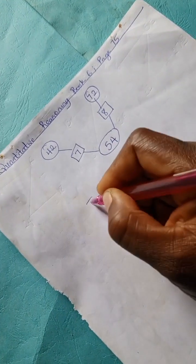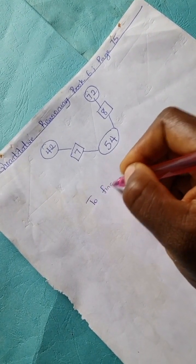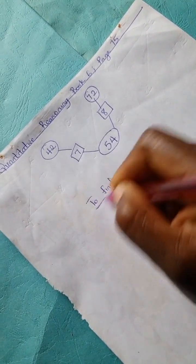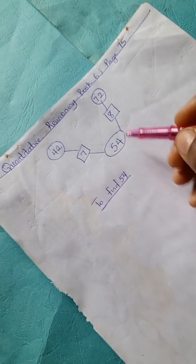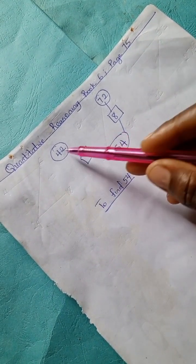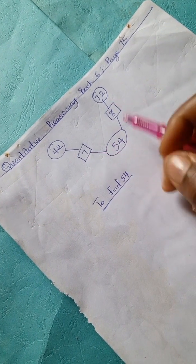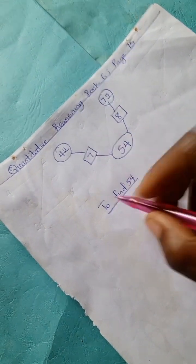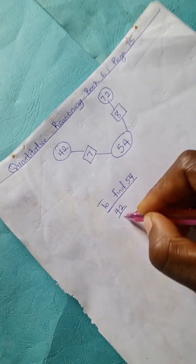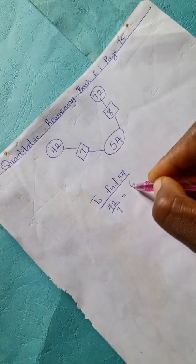So let's try to find 54. To find 54, we're going to look at this number and this one. We're going to have 42 divided by 7 is 6.